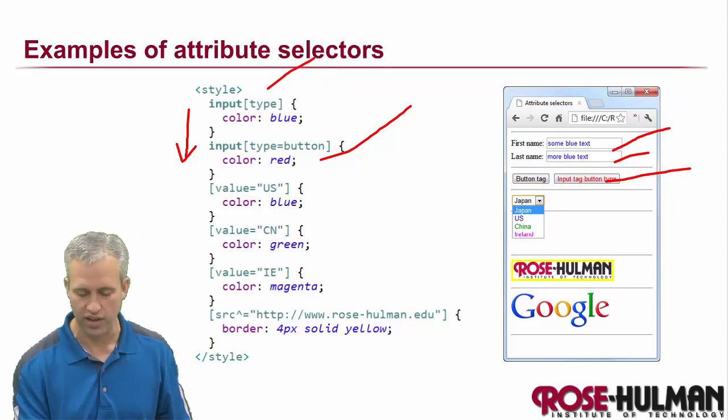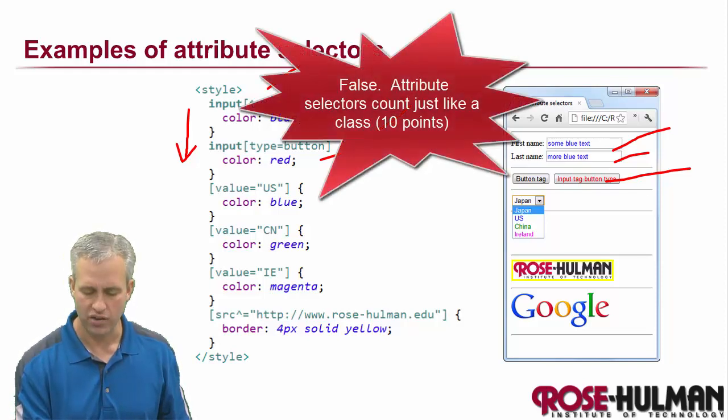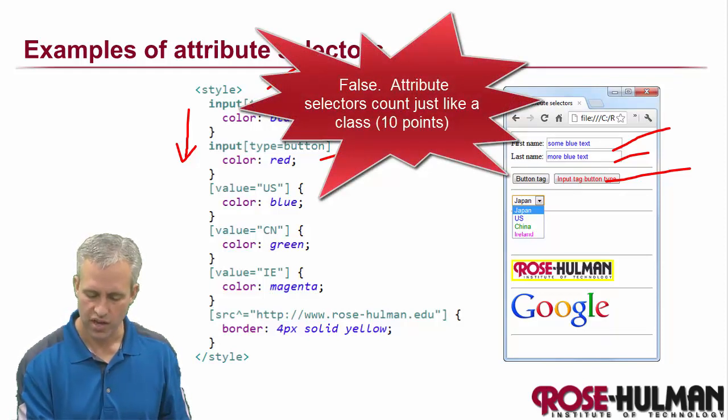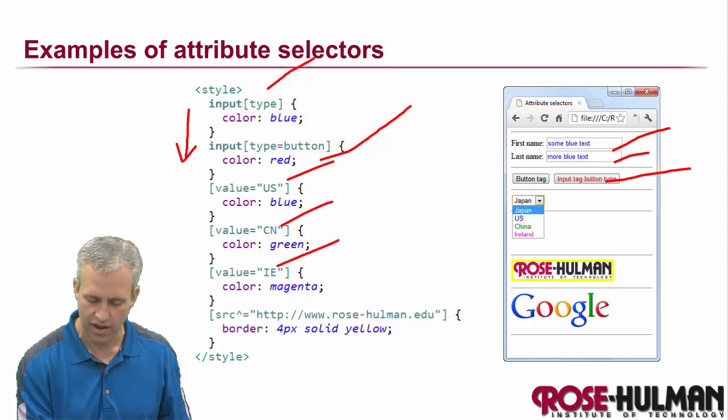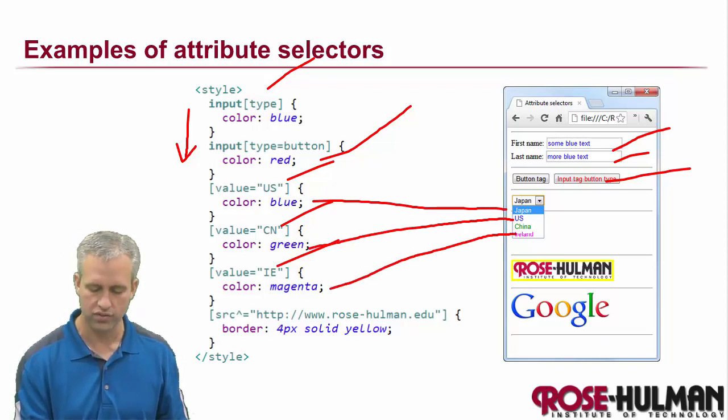So they actually have the same rule. They're both one, right, and the second one, one. I'd have to check on that, but the attributes, I believe, don't count in the specificity. And then other things here, I can see that I'm looking for something with the value US, CN, or IE, and they're going to have the colors blue, green, and magenta. There's some cool things there.